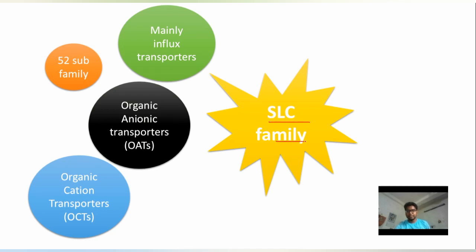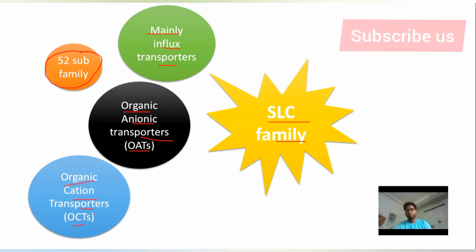The SLC family — solute carrier transporters — are mainly influx transporters. There are 52 sub-families, but two important ones are OATs (organic anion transporters), which transport anions into the cell, and OCTs (organic cation transporters), which transport cations into the cell.